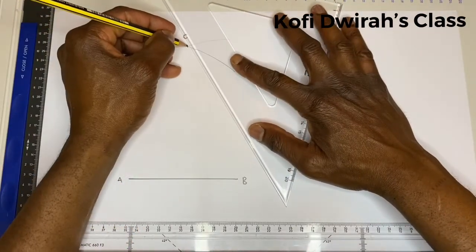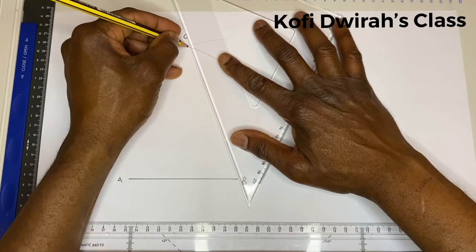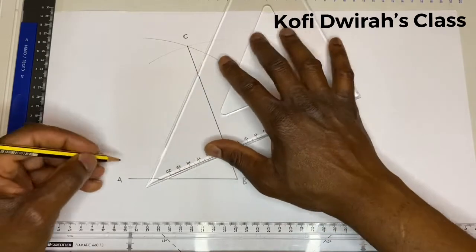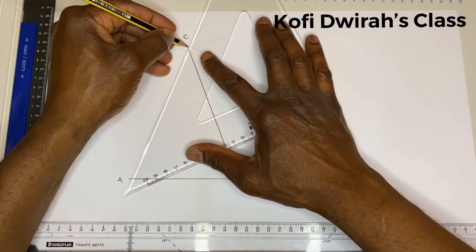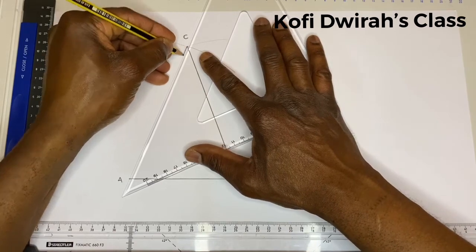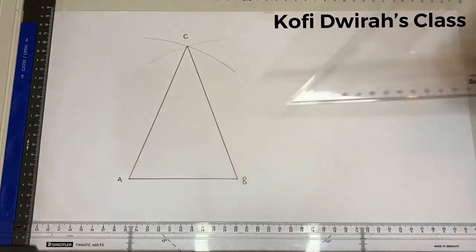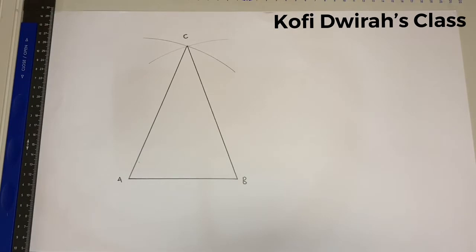From C to B, then from C to A, so we have our isosceles triangle. And we have to construct a circle that will circumscribe this triangle.